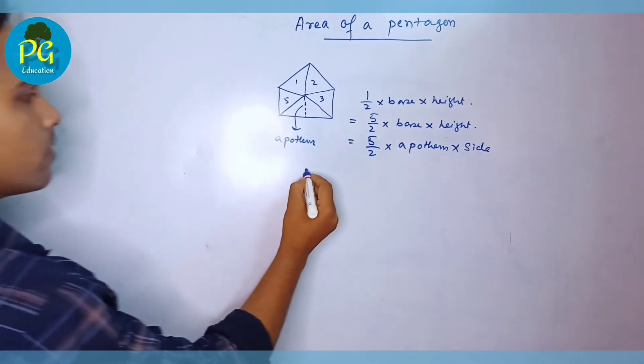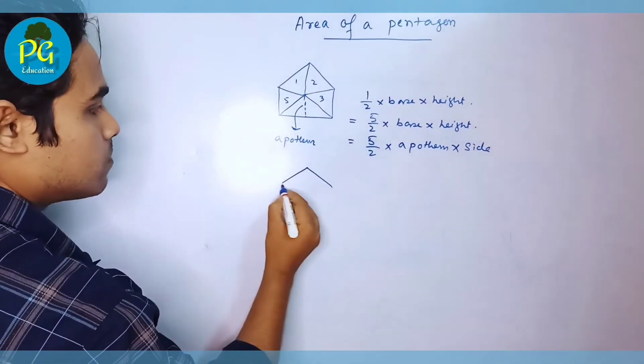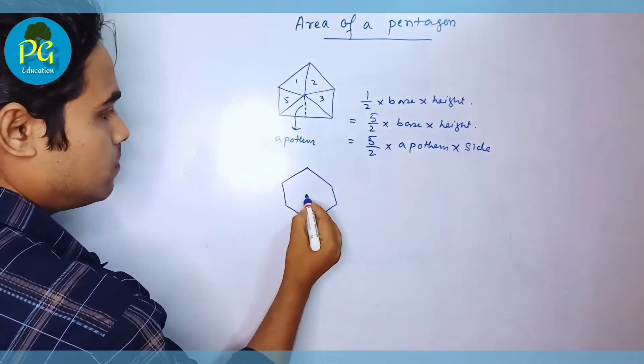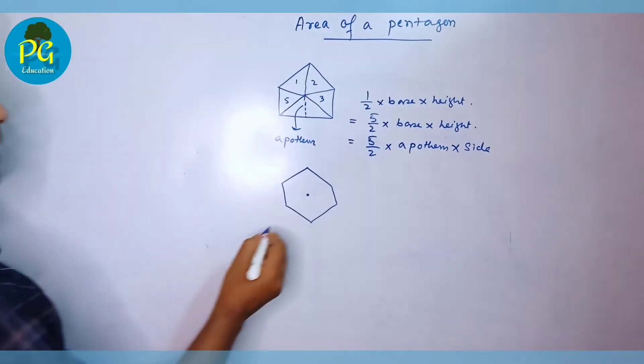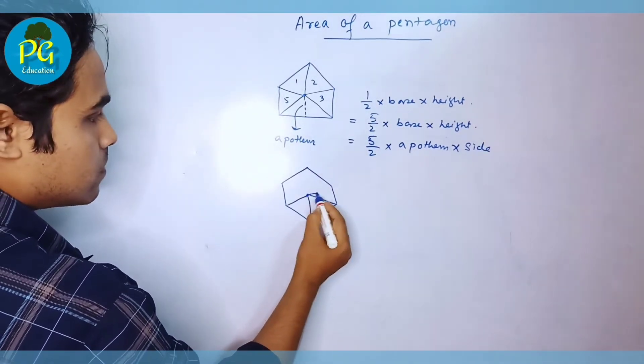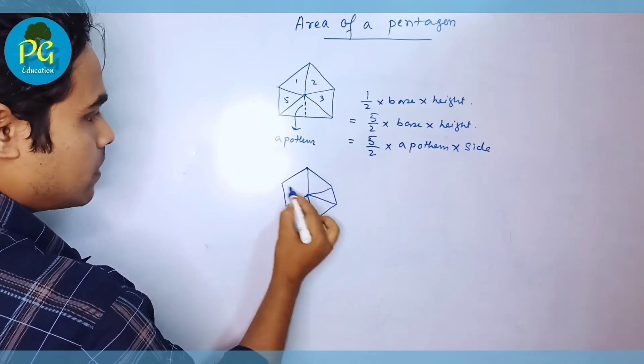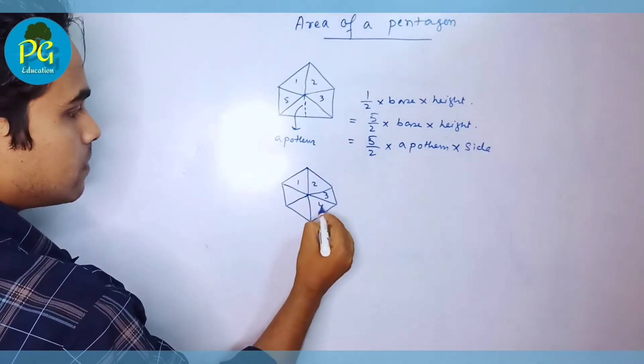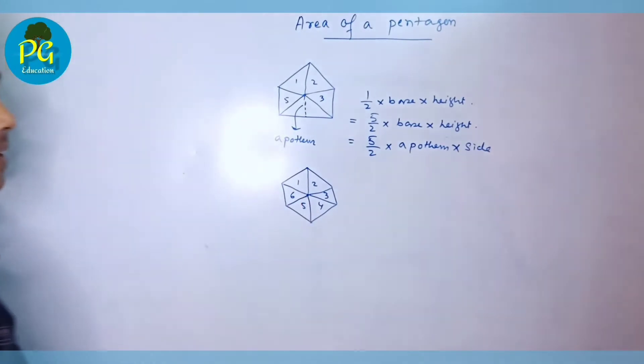Now hexagon. If we join the center with the six corners of the hexagon, then how many triangles we get? We get six triangles.